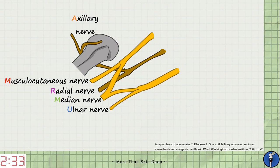An easy way to remember the names when drawing them from this perspective is using the mnemonic, you must revise more anatomy, with U for ulnar nerve, M for median nerve, R for radial nerve, M for musculocutaneous nerve and A for axillary nerve.